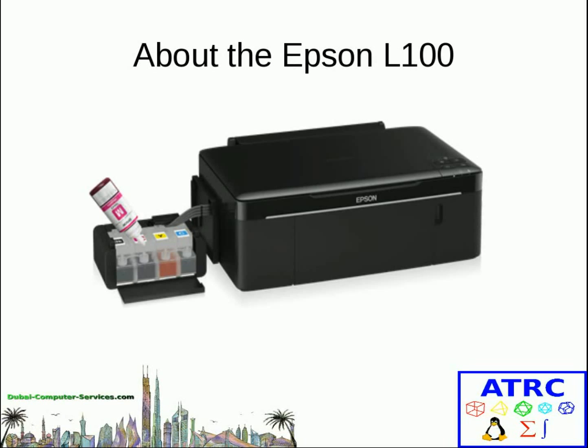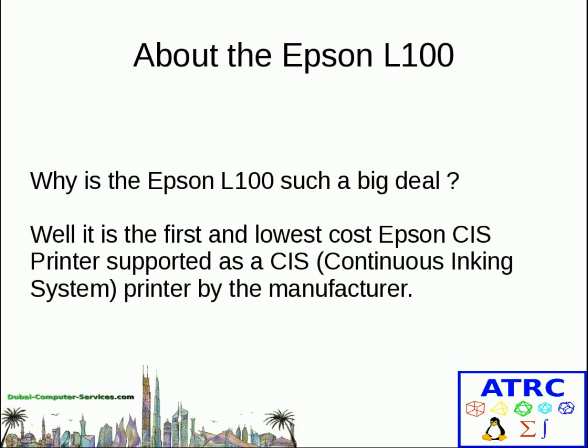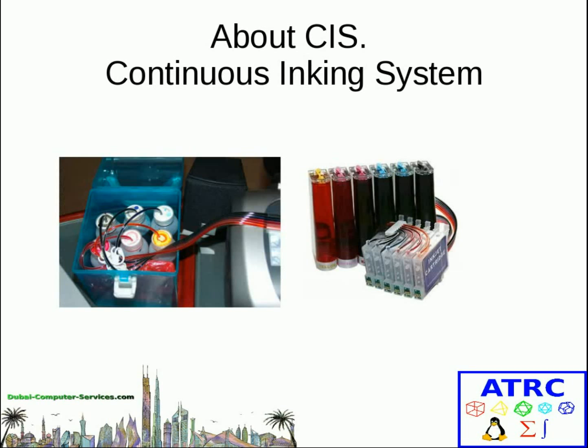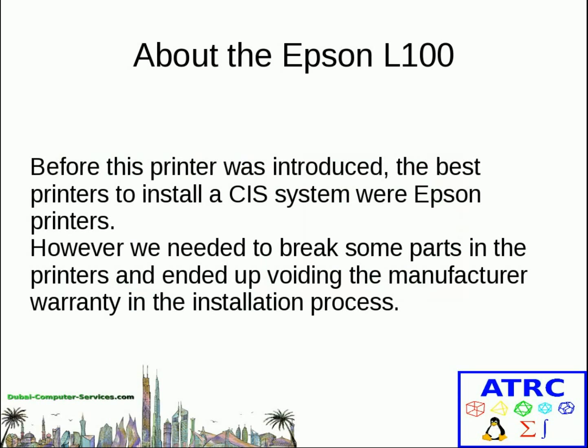About the Epson L100 — why is it so useful or important? Basically, it's a CIS printer. CIS means Continuous Inking System. Before CIS was available from manufacturers, you had to install it yourself — you had bottles and cartridges which people used to install in their printer. In some cases, they had to break some of the casings of the printer, voiding the warranty, and even new printers had to be modified in some areas to install this system.